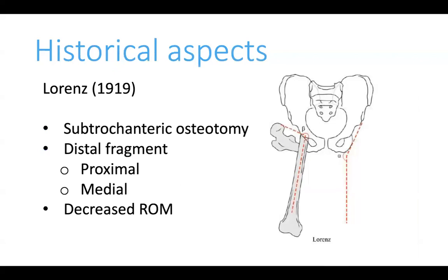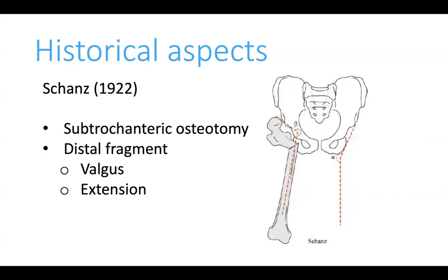Probably the first description of pelvic support osteotomy was by Lawrence in 1919, who performed a subtrochanteric osteotomy where the distal fragment was translated proximally and medially into the empty acetabulum. However, the problem with this procedure was that it resulted in groin impingement, pain, and decreased range of motion. The pelvic support osteotomy we know today is actually a modification of the one described by Schanz, and is a subtrochanteric valgus extension osteotomy.